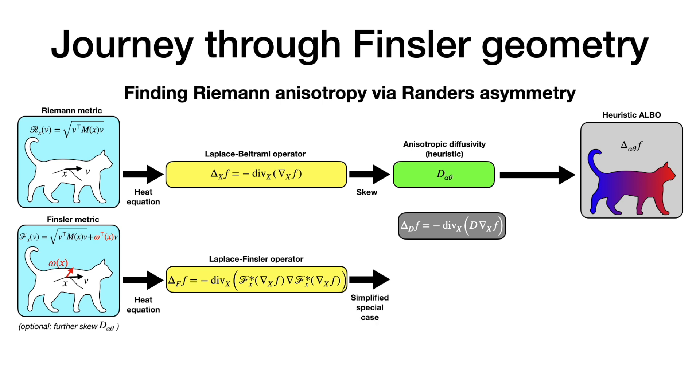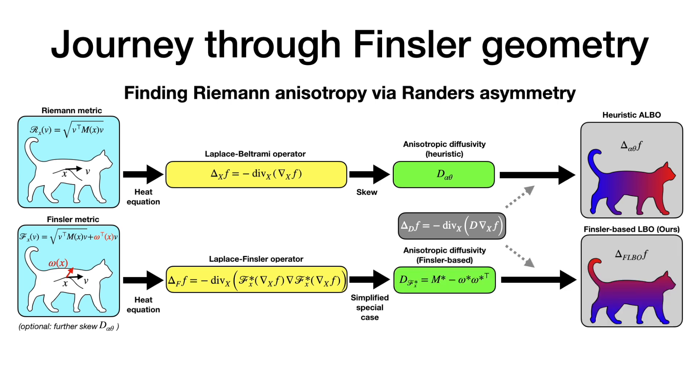Under some simplifying assumptions and focusing on a special case, the operator simplifies to an anisotropic LBO with similar expression as the heuristic ones, except that the diffusivity has an explicit form governed only by the Rander's metric parameters.